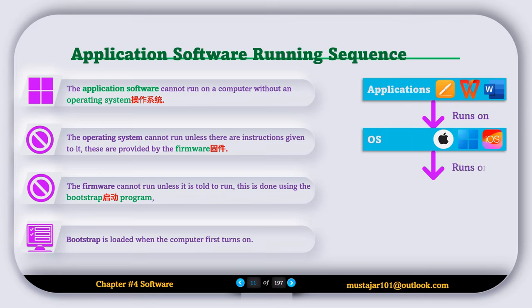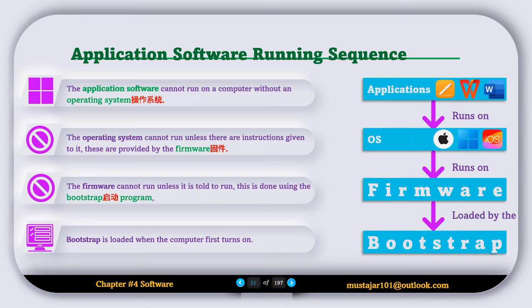When you press the power button on your computer, it first loads the bootstrap program. The bootstrap program then loads the firmware, and when the firmware is running, it loads the operating system. Once the operating system is running, you can run different applications on top of it, for example Photoshop, Word, or any other software.